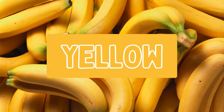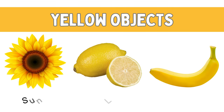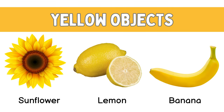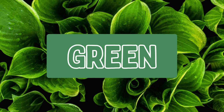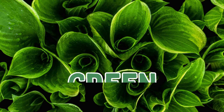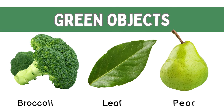Yellow: Sunflower, Lemon, Banana. Green: Broccoli, Leaf, Pear.